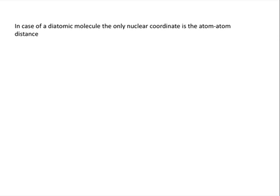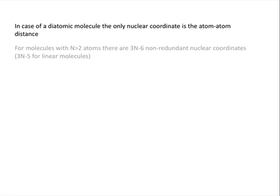In case of a diatomic molecule, the only nuclear coordinate to be considered is the atom-atom distance. While for molecules with more atoms, there are 3N-6 non-redundant nuclear coordinates.